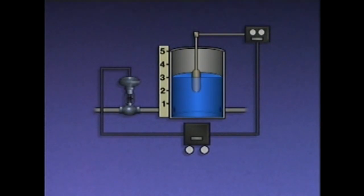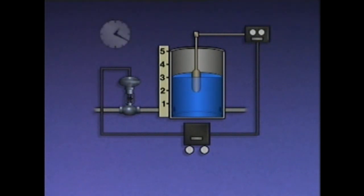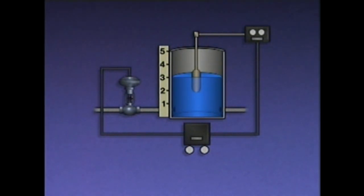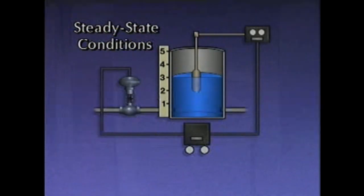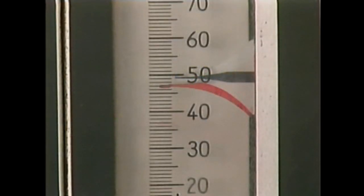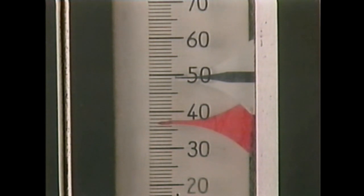When a process is operating normally, the variables for that process will be at or near their desired values. The desired value of a process variable is known as the set point. For example, the set point for the water level in this system is three feet. When the values of the process variables remain relatively constant over a period of time, the system is said to be operating under steady state conditions. Most control systems will allow slight variations in the values of process variables, but if the value changes significantly from its set point, corrective action may be needed to return the process to its original operating conditions.